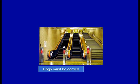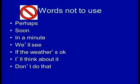He thought it was an instruction: if you went on the escalator, you had to have a dog. What really bothered him was that all sorts of other people were going up and down without dogs, so they weren't obeying the rules. So it wasn't a phobia — it was just complete misunderstanding. It's important to know what words not to use. Forbidden words should include 'perhaps', 'soon', 'in a minute', 'we'll see', 'if the weather's OK', 'I'll think about it' — all vague terms. And it's absolutely no-go to say 'don't do that' unless you tell the child what to do instead.